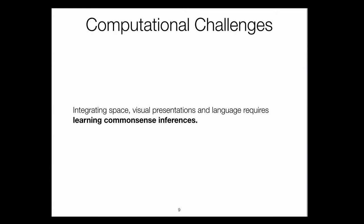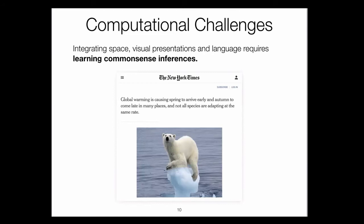Integrating visual presentations and space with language requires oftentimes learning common sense inferences. For example, this is a screenshot from a New York Times post that says global warming is causing spring to arrive early and autumn to come late, and not all species are adapting at the same rate. We rely on our background knowledge to match the polar bear miserably standing on a piece of melting ice with the word 'species' and infer that this is a species not adapting well. There are invisible links connecting text and imagery that we resolve using background and common sense knowledge.